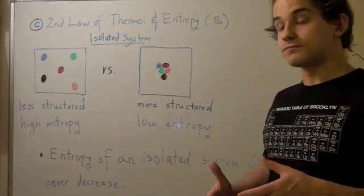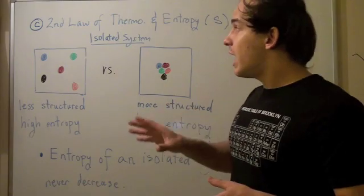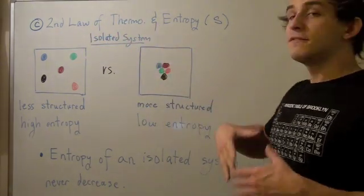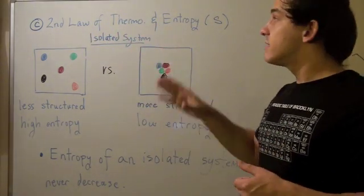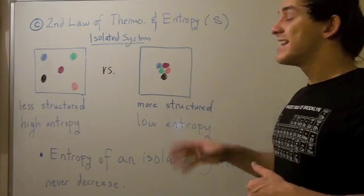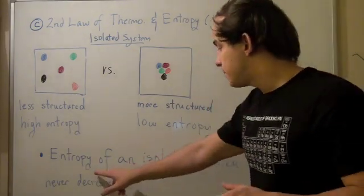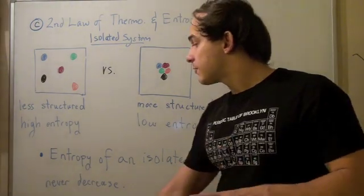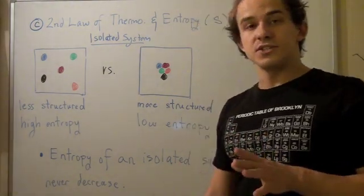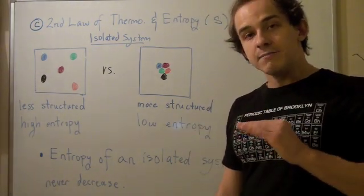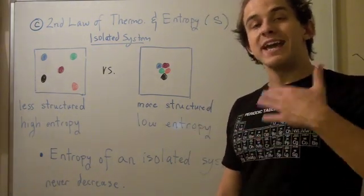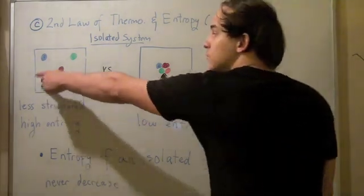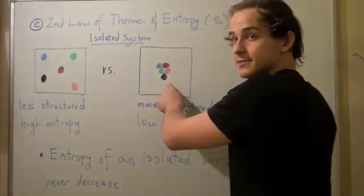So we can refine the second law of thermodynamics into the following: the second law of thermodynamics states that the entropy of an isolated system will never decrease. It will either stay the same or it will increase. In other words, it will never go from the scattered high-entropy state back to the structured low-entropy state.